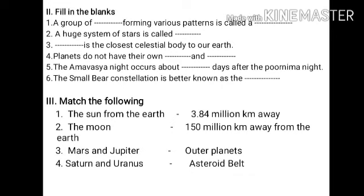Next: a huge system of stars is called a — . The answer is galaxy. Next: — is the closest celestial body to Earth. The answer is the Moon.